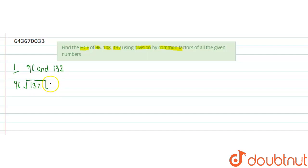96 into 1 is 96. The remainder is 36. Now we will keep this remainder as a divisor and this 96 as dividend.